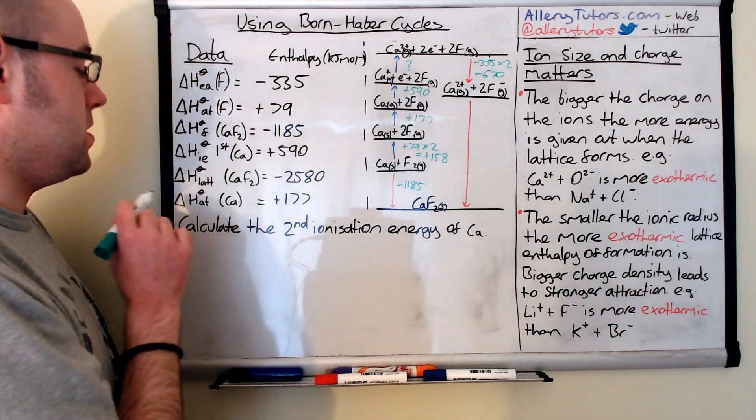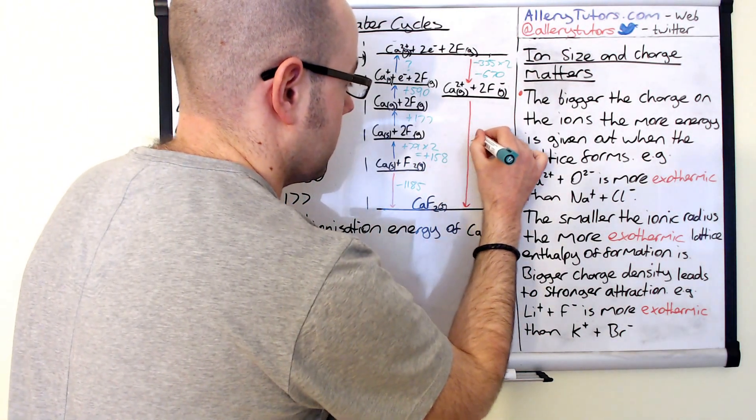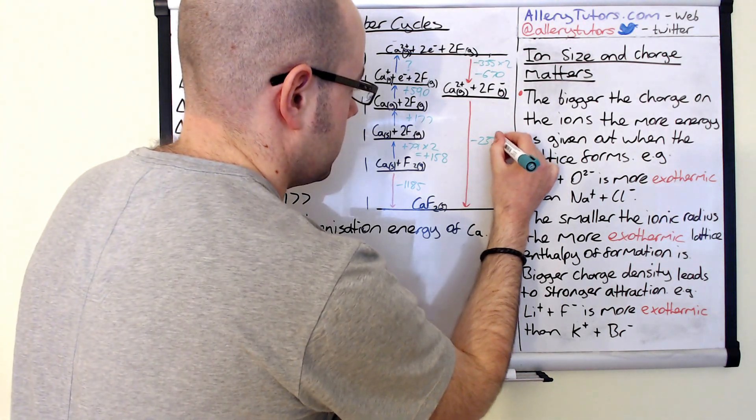Okay so the number here is the lattice enthalpy of formation is minus 2580. It's a big big number. So this is very exothermic this step. 2580.